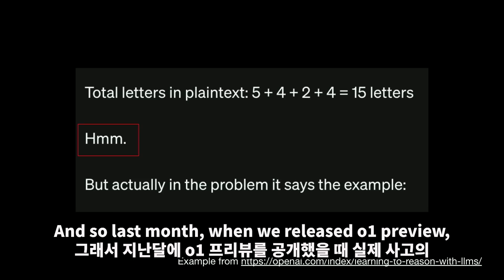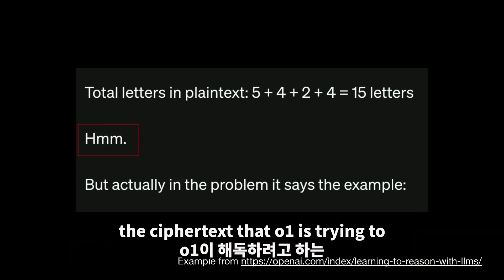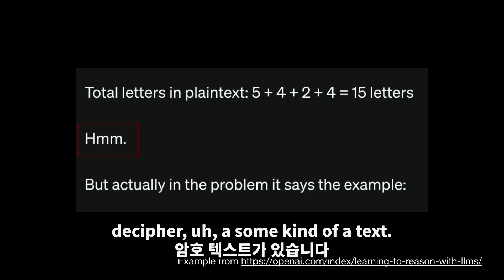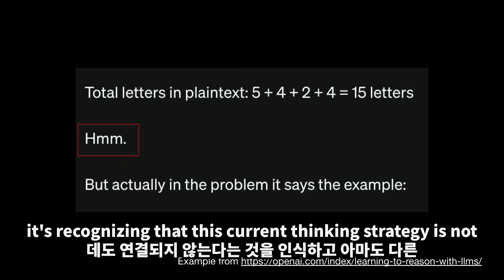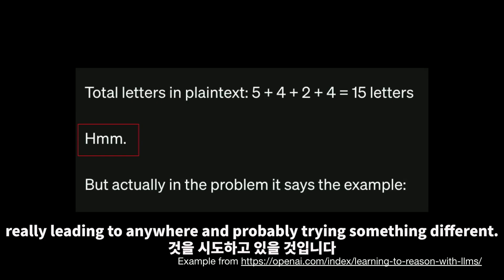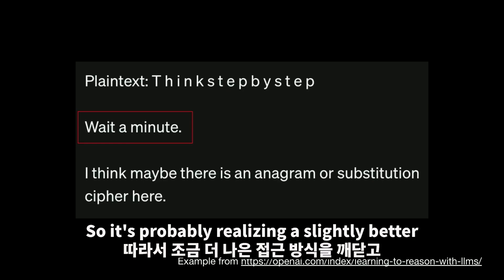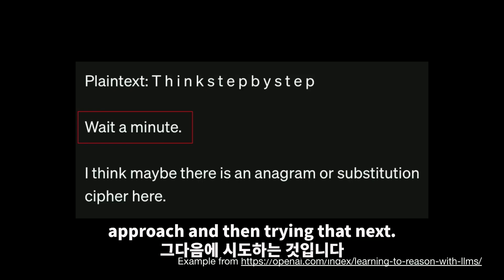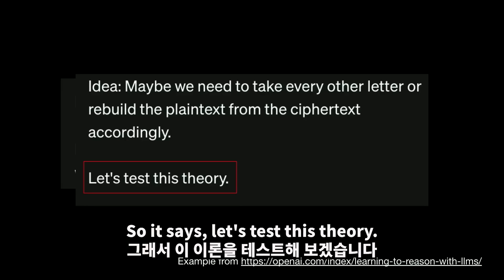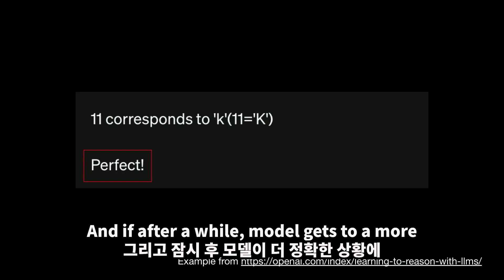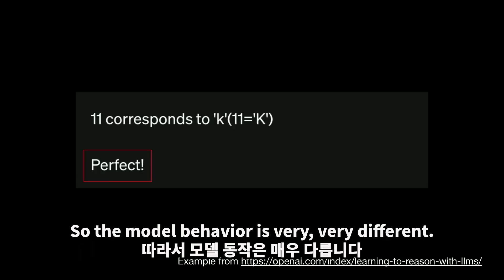Last month, when we released O1 preview, we showed some examples of actual chain of thought going on. In this particular example, we have the cipher text — the model is trying to decipher some kind of text. The model says 'hmm,' recognizing that the current thinking strategy isn't leading anywhere and tries something different. Then it says 'wait a minute,' realizing a slightly better approach and trying that next. Eventually the model has a more concrete idea and says 'let's test this theory.' After a while, the model gets to a correct strategy and says 'it's perfect.' So the model behavior is very, very different.